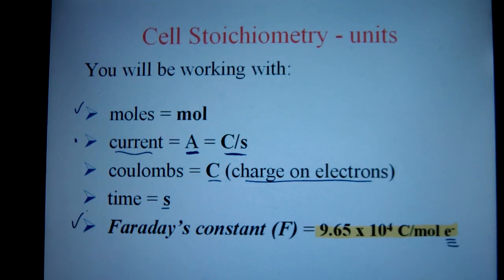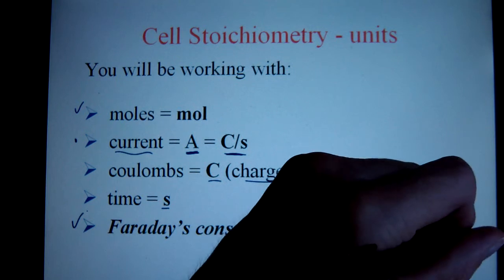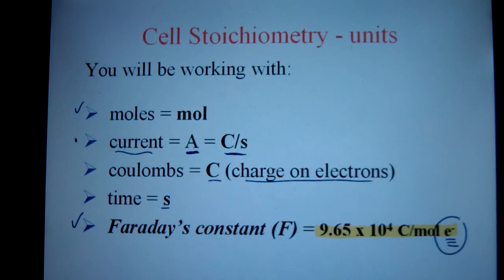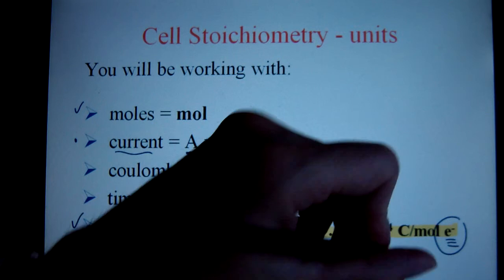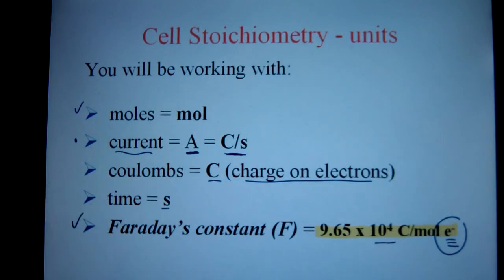Then you have this new conversion factor, this Faraday's constant. It's in your data book list. You don't have to memorize, but please make note that it's Coulombs per mole of electrons. So that's a little bit new. And also, this exponent here on the base 10 is a positive 4, not negative.